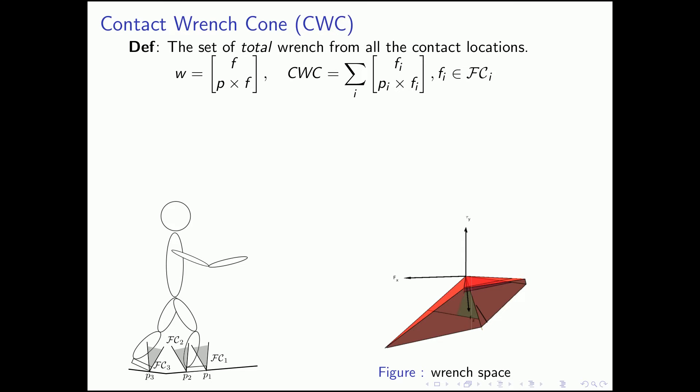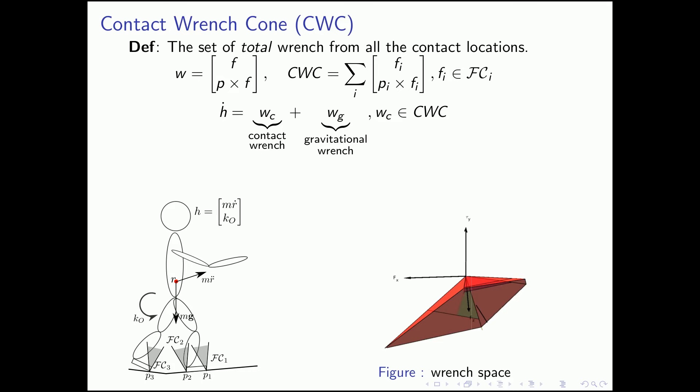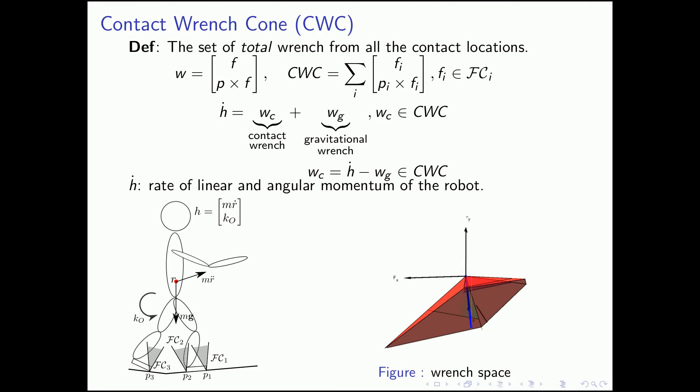Apart from the contact forces, the robot is also subject to gravitational force applied at its center of mass. The contact force together with the gravitational force would generate an acceleration of the robot's center of mass and change the robot's angular momentum. According to Newton's law, F equals ma: the rate of linear and angular momentum equals the summation of the contact wrench and the gravitational wrench. This is the same as saying the contact wrench — computed by subtracting the gravitational wrench from the rate of momenta — should lie within the contact wrench cone. When this inclusion holds, it is guaranteed that there exists a friction force lying within the friction cone that can generate the desired acceleration.